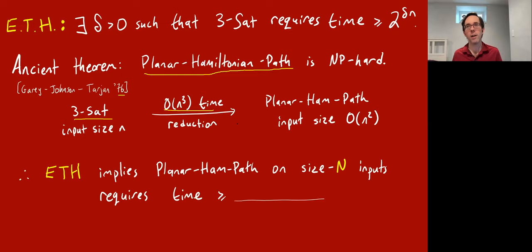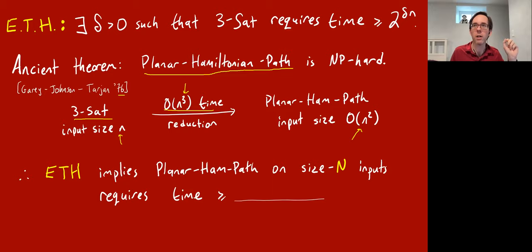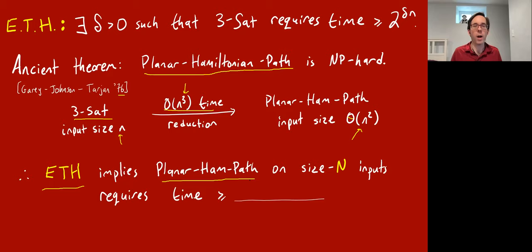Now I'm going to ask you to fill in a blank. Their reduction has the following property: on inputs of size n, the reduction runs in cubic time and produces a graph whose size — number of vertices and edges — is n squared. So under the assumption of ETH, you can conclude that planar Hamiltonian path requires at least a certain amount of time on size capital-N inputs. What is that certain amount of time?